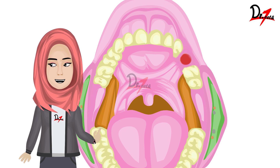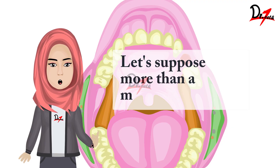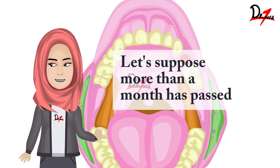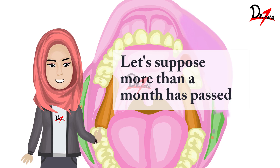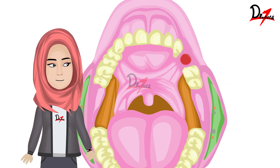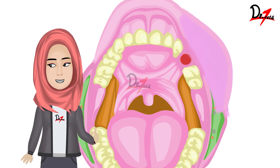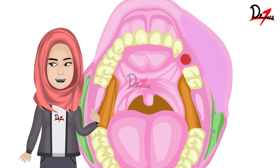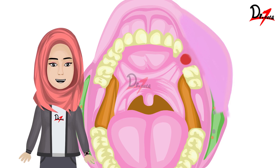Now let's talk about the treatment of long duration cases — where more than a month has passed. Usually by this time the fistula tract is well formed, so we require a surgical closure. Such patients typically have infection, pus discharge, or complain of foul taste and foul smell in the mouth. The first thing we do is clean the sinus thoroughly with normal saline until it is clear, then put the patient on antibiotics and analgesics. When the condition improves, we go for surgical repair.